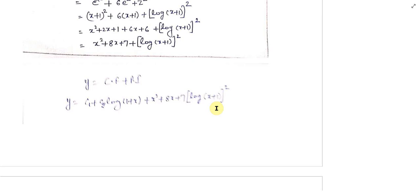Is tarah se hum equations ko solve kar sakte hain — homogeneous equation ya doosri equations jinko hum homogeneous mein reduce kar sakte hain. At last hamen linear differential equation with constant coefficient mein change karna hota hai, aur in equations ko solve karne ke liye jis method ka hum ne use kiya hai, PI nikalne mein unka use karte hue hum equations ko solve karte hain. Thank you.